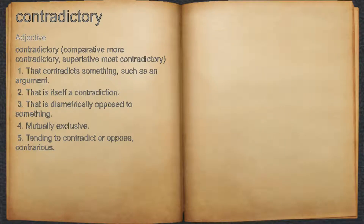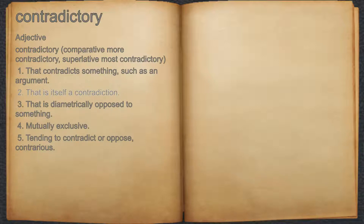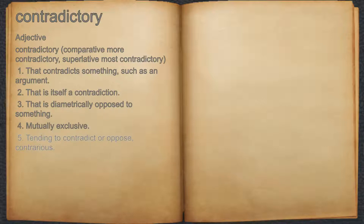Contradictory — Adjective. 1. That contradicts something, such as an argument. 2. That is itself a contradiction. 3. That is diametrically opposed to something. 4. Mutually exclusive. 5. Tending to contradict or oppose; contrarious.